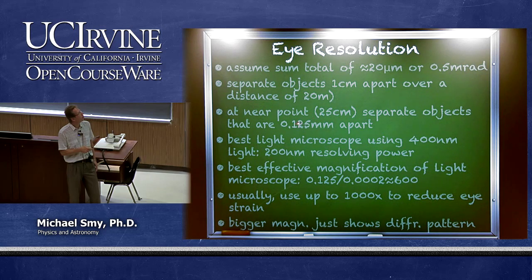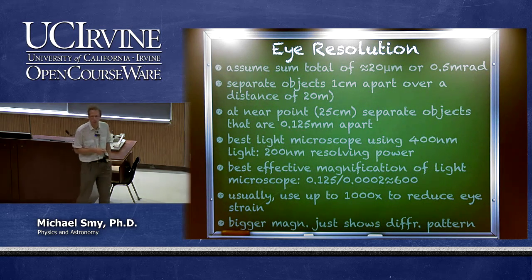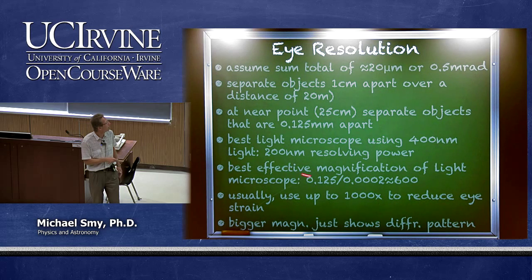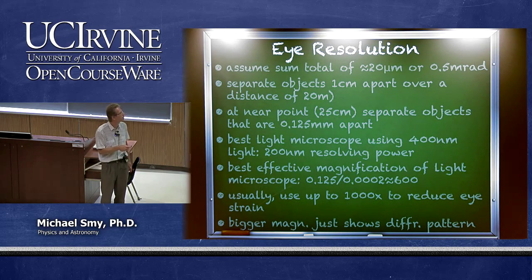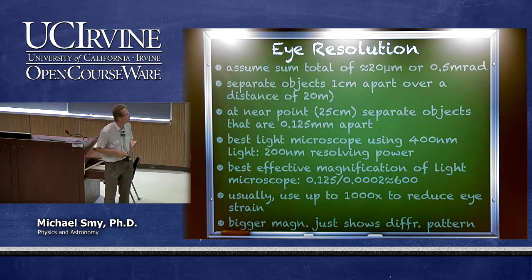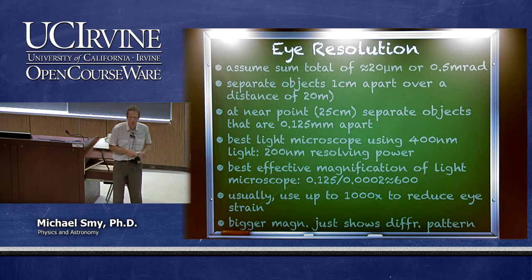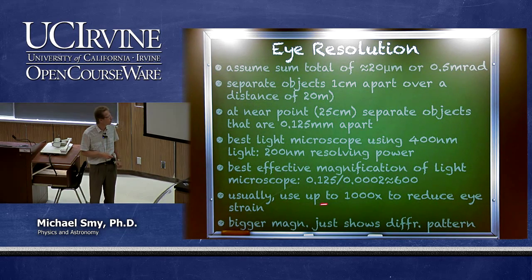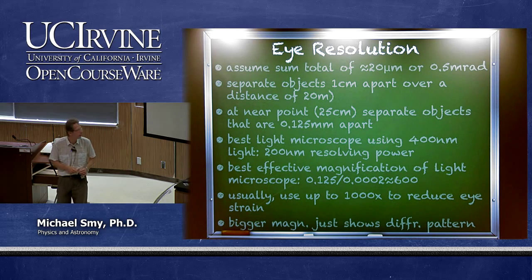At the near point, we can separate objects 0.125 millimeters apart. The best light microscope using 400 nanometer light has a resolving power of 200 nanometers — half the wavelength. Taking the ratio gives a best effective magnification of roughly 600 times over the naked eye. Microscopes typically use up to 1,000 times to reduce eye strain, but going beyond that only reveals diffraction patterns rather than the object you want to study.